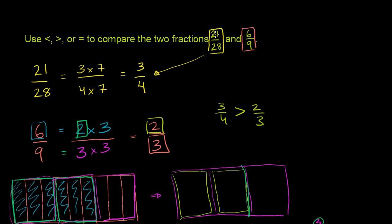But you can see from this visually that 3/4 is greater than 2/3. Now they want us to compare these two fractions. So 21 over 28 is the same thing as 3/4. So 21 over 28 is going to be greater than 2/3, which is the same thing as 6 over 9. And so we are done.